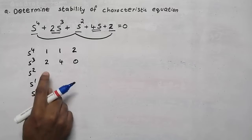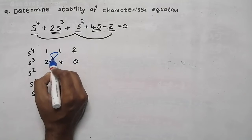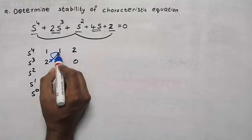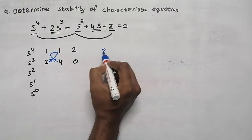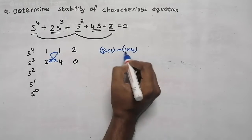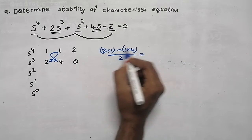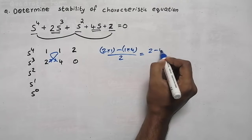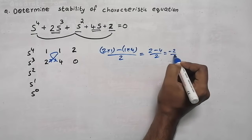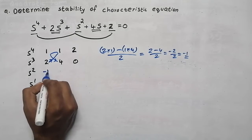To find the first element of the next row, we do the cross-multiplication starting from 2: 2 into 1 minus 1 into 4, all divided by the starting element 2. So 2 minus 4 equals minus 2, divided by 2, giving minus 1.